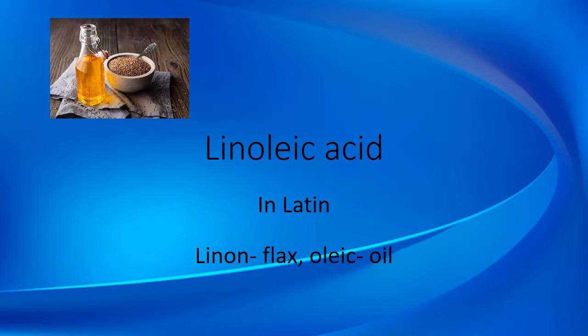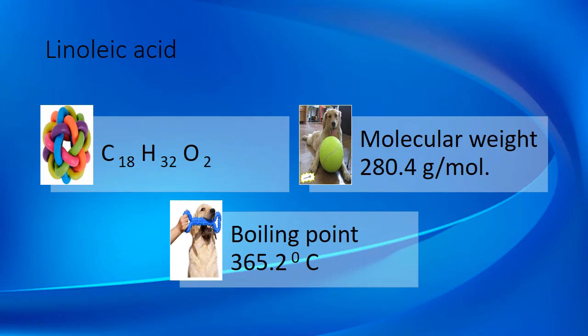Linoleic acid: in the Latin language, 'linen' means flax and 'oleic' means oil. This compound is highly concentrated in black seed oil, therefore it is called linoleic acid. The chemical formula of linoleic acid is C18H32O2. Its molecular weight is around 280.4 grams per mole, and its boiling point is around 365.2 degrees Celsius.